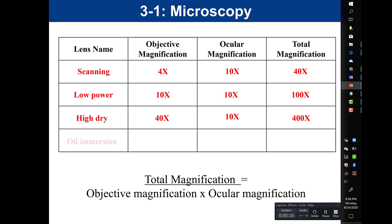Our last lens is the oil immersion lens, our highest power lens. It is called oil immersion because we have to use immersion oil. The oil immersion lens has an objective magnification of 100x. The ocular is still 10x, so our total magnification is 1,000x — magnifying an image 1,000 times what we see with the naked eye.